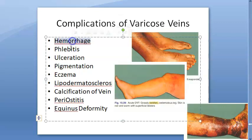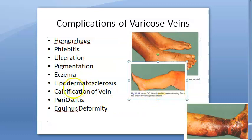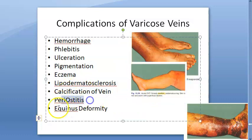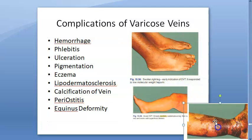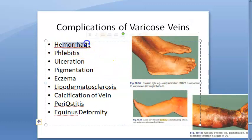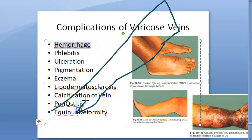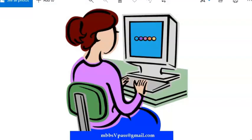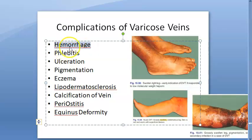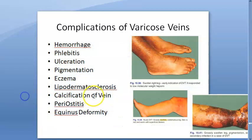Complications of varicose veins include haemorrhage, phlebitis, ulceration, pigmentation, eczema, lipodermosclerosis, calcification of the vein, periostitis, and equinus deformity. To stop haemorrhage in varicose veins, elevate the leg and apply compression — elevation alone is sufficient as blood will drain back and bleeding stops.